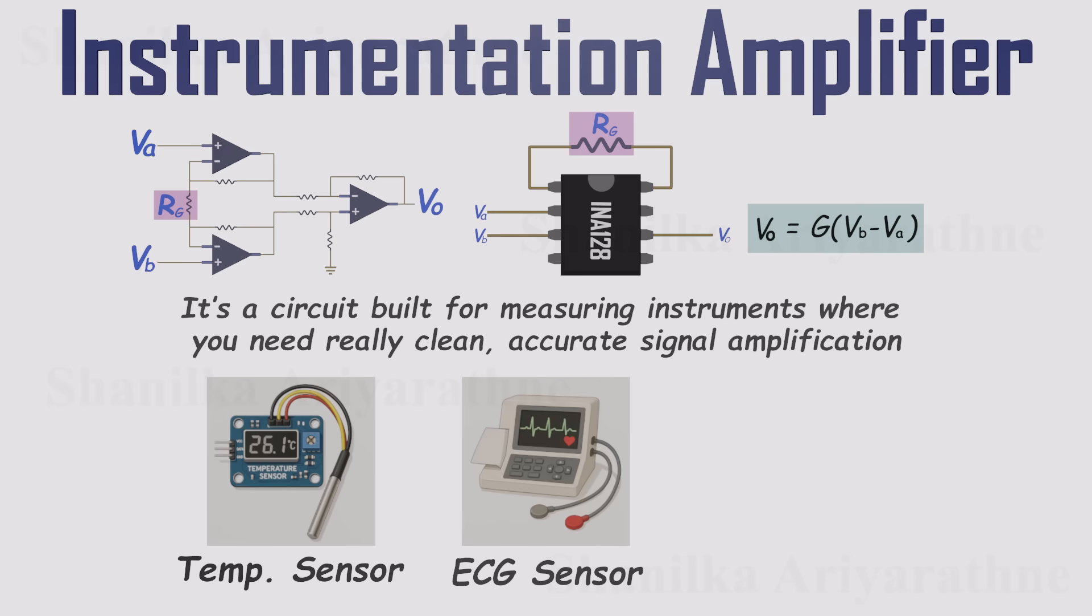an ECG machine, or a strain gauge used in load cells and pressure sensors. All of these devices produce tiny signals that need to be amplified without distortion or error. That's where instrumentation amplifiers shine.